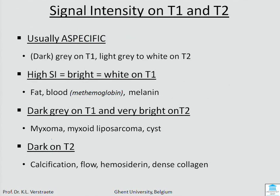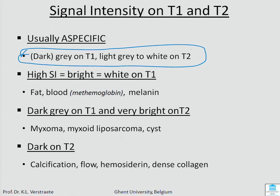You should study the signal intensity of lesions on T1 and T2. Most lesions are nonspecific: dark gray on T1, light gray or white on T2. But if you have high signal intensity — white on T1 — it's fat, blood, methemoglobin, or melanin. If it's dark gray on T1 but very bright on T2, it's a myxoma, myxoid liposarcoma, or a cyst. If it's dark on T2, this means calcification, very high flow, hemosiderin, or dense collagen.